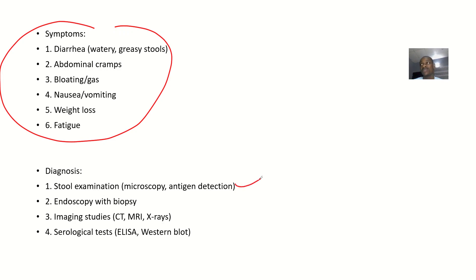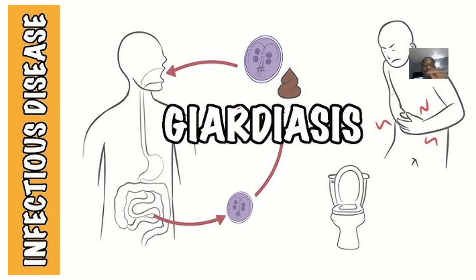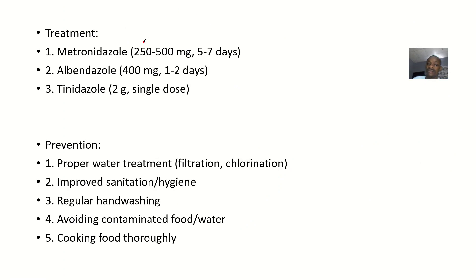For diagnosis, to confirm this disease condition you may do a stool examination, endoscopy, biopsy, imaging studies, or serological tests. Giardiasis follows a fecal-oral route of transmission and is mostly found in places where hygiene levels are low, where feces contaminate the water supply and the cycle repeats.